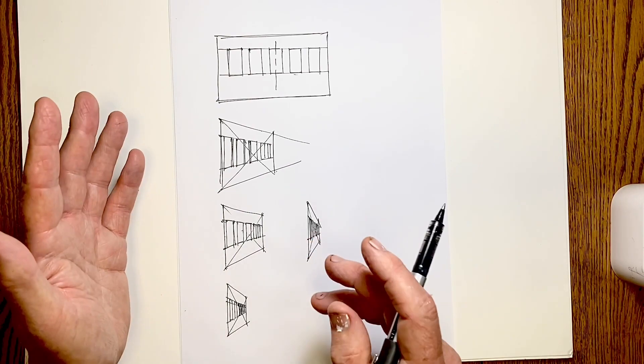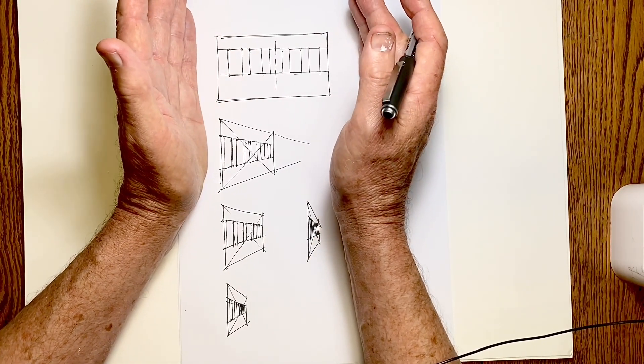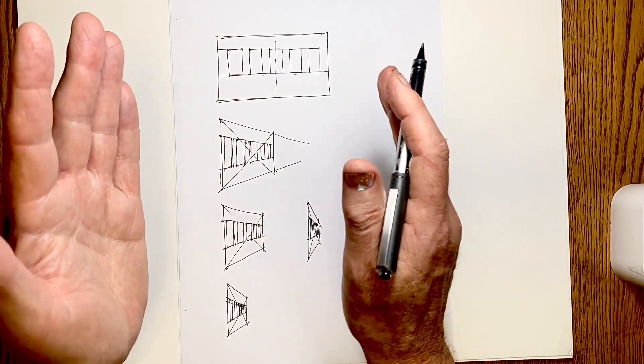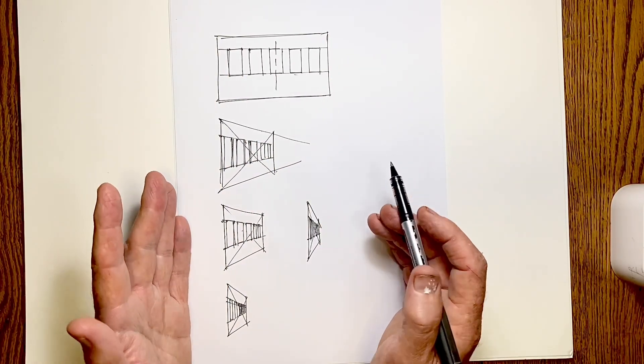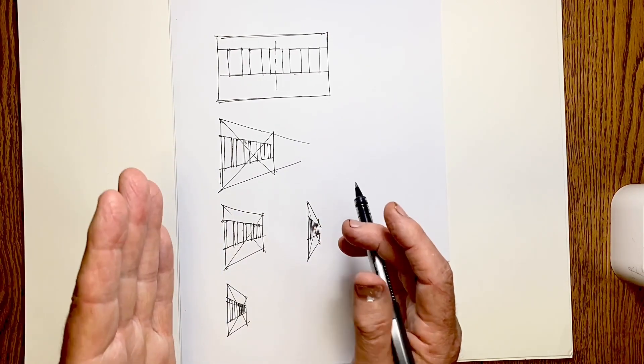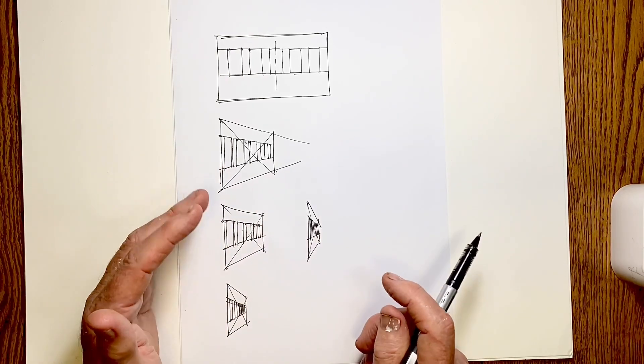And we know from experience that when we look at something straight on, all the elements which are the same size look the same size. But we know that when the wall angles away at a greater angle, the furthest things start to get narrower. And we know that the greater the angle of the building moving away from us, the greater this compression becomes across the whole wall.